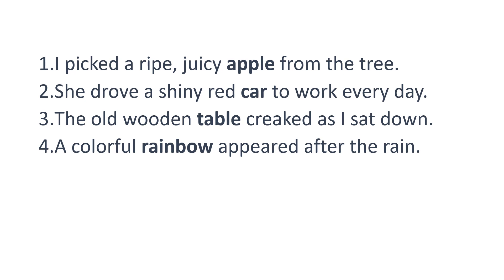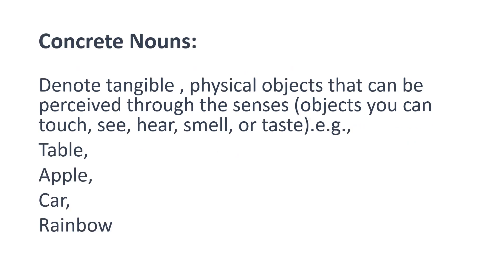What's common among these nouns — table, apple, car and rainbow? These are all physical objects. You can see them, or taste them, or touch them. So any object you can touch, see, hear, smell or taste is called a concrete noun.